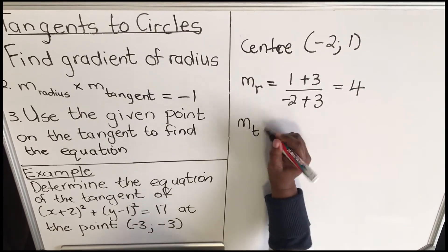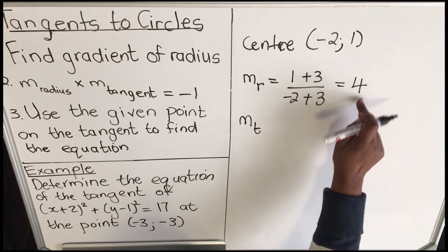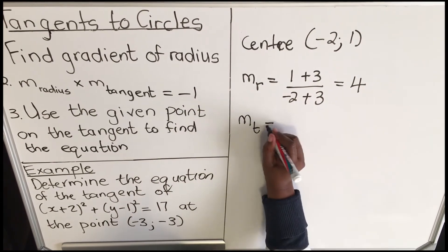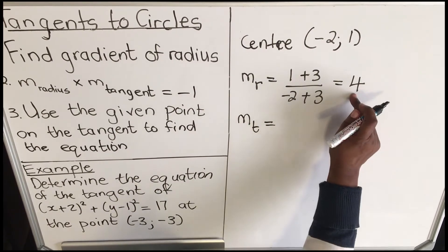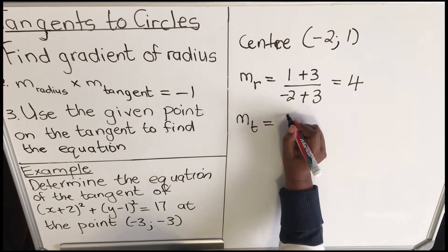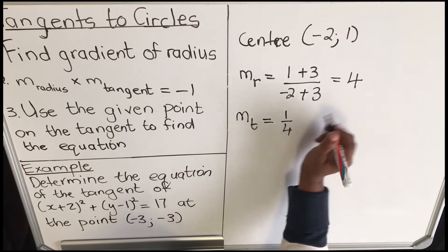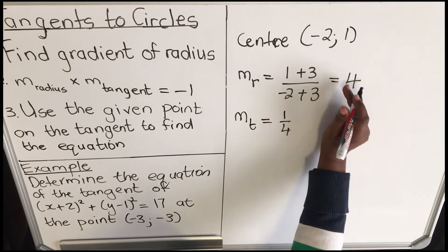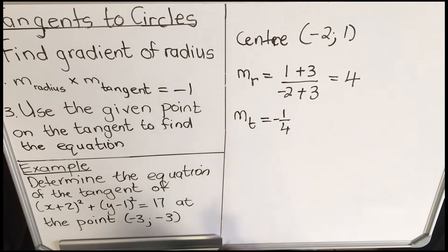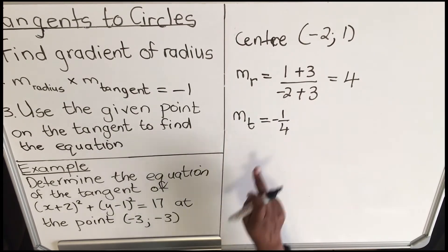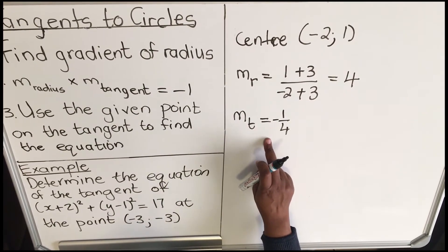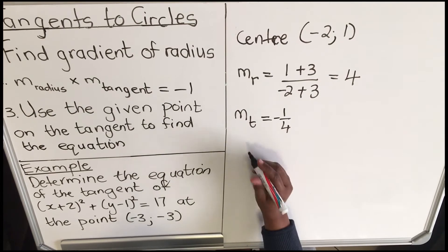The gradient of the tangent: you take the gradient of the radius, make a reciprocal to get 1/4, and then change the sign — it was positive, so it becomes negative. So the gradient of my tangent is −1/4.